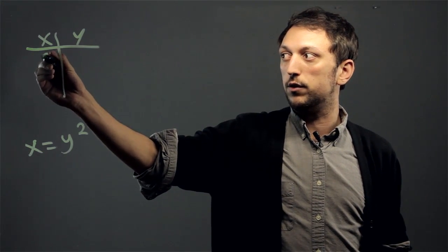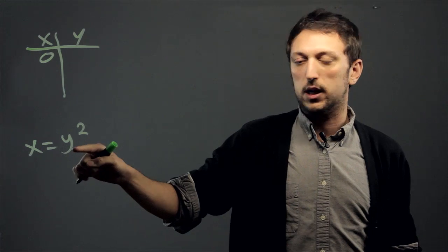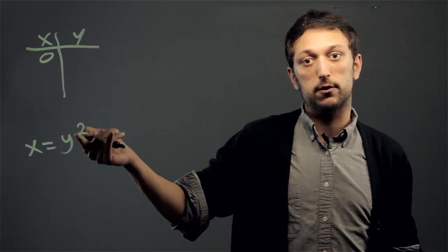So if x equals 0, 0 equals y squared, well then y has to be 0 as well.